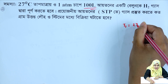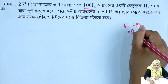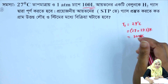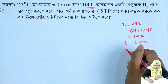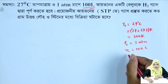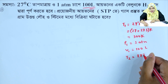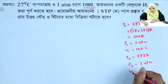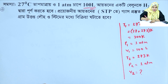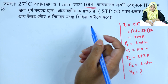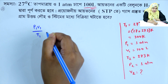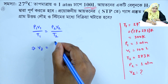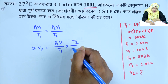T1 is 27 degrees Celsius. Converting to Kelvin scale by adding 273 gives 300 Kelvin. P1 is 1 atm. V1 is 100 L. T2 is 273 Kelvin. P2 is 1 atm. Using V1 by T1 is equal to V2 by T2, so V2 equals V1 by T1 into T2.